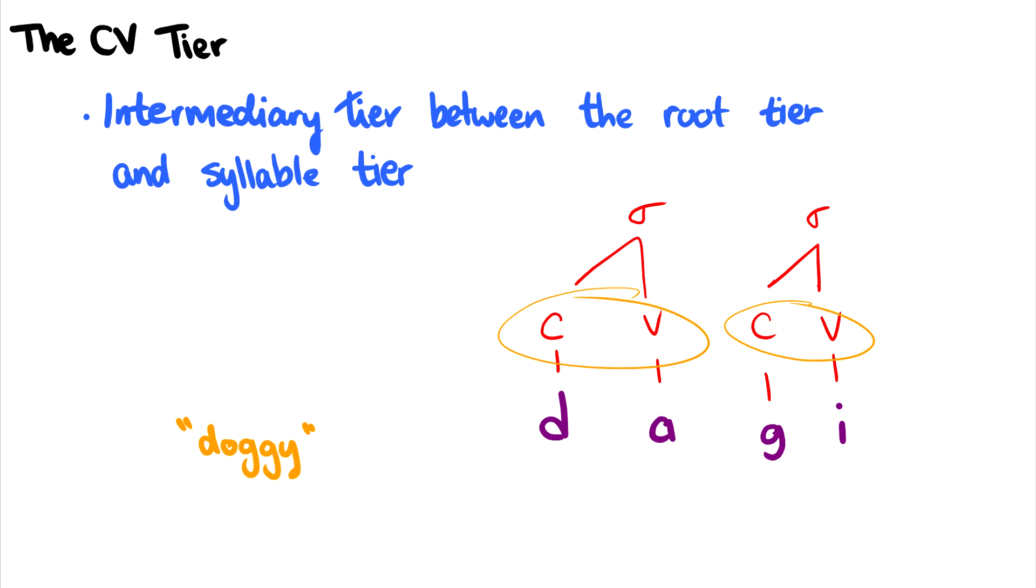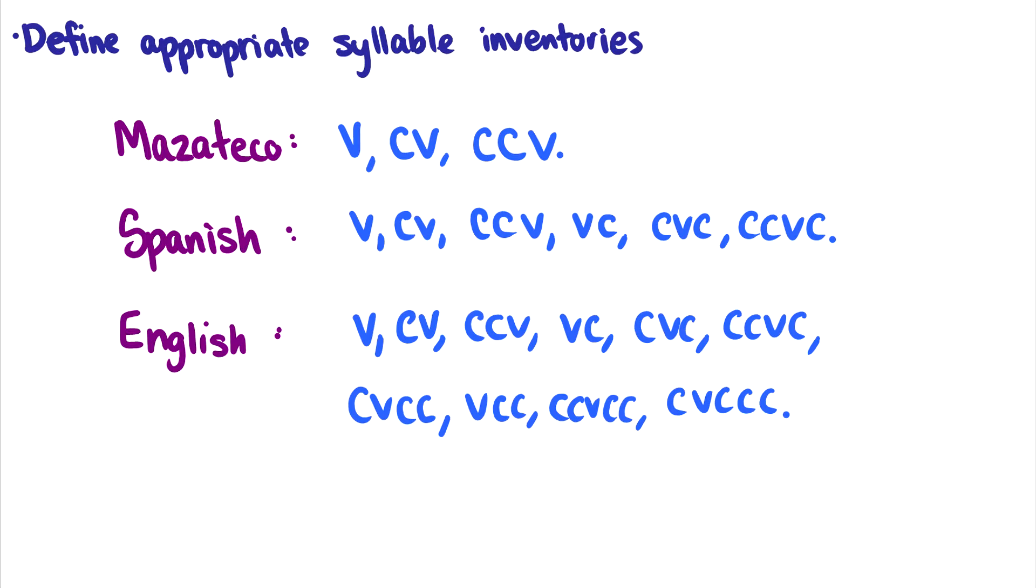For instance, in English, CV syllables are perfectly allowed. And of course, according to your language, you may have different syllable inventories. So for instance, in Mazateco, you can only have Vs, CVs, or CCVs. You can never have codas.